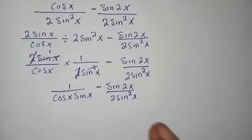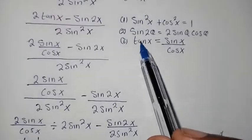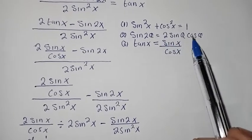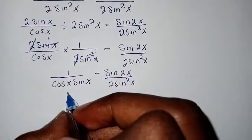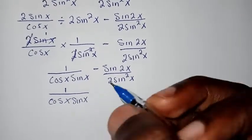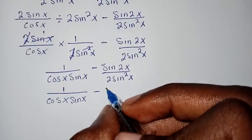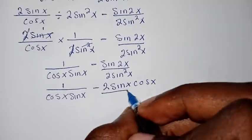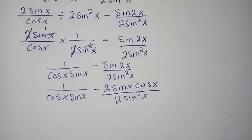Now remember the trig identity for sine two x shown earlier: sine two x equals two sine x cosine x. So we replace sine two x in the second term to get one over cosine x sine x, minus two sine x cosine x, all over two sine squared x. The two in the numerator and the two in the denominator cancel, and one sine x also cancels, leaving cosine x over sine x.